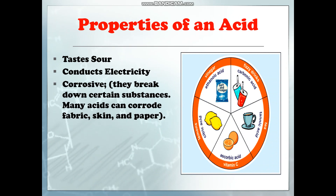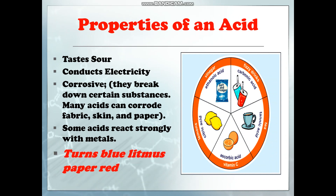What are the properties of an acid? First, it tastes tart, conducts electricity, and is corrosive — they break down certain substances. Many acids can corrode fabric, skin, and paper. Some acids react strongly with metals. When litmus paper turns red, it indicates an acid.